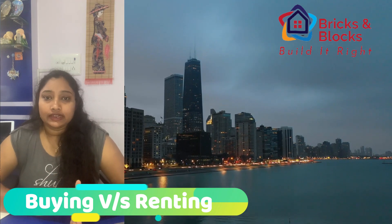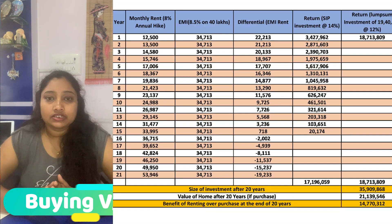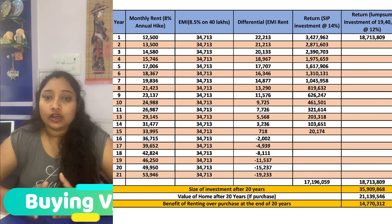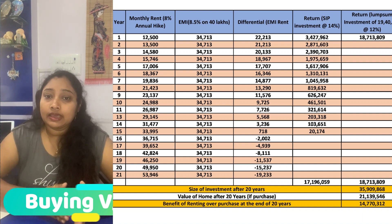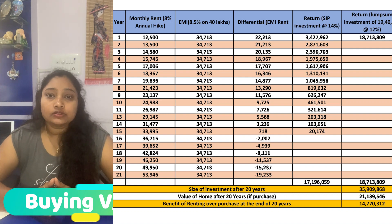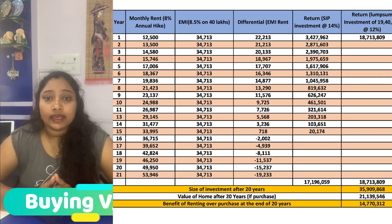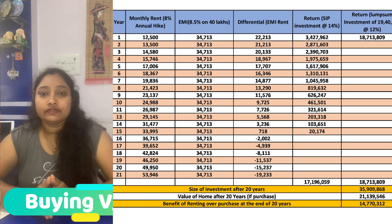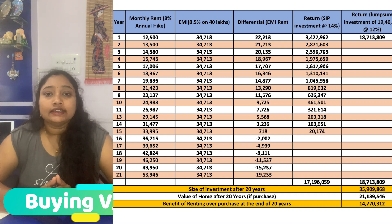To compare owning versus renting, the first step is to calculate the investment returns on the down payment and other related costs incurred while buying the house. The second step is to calculate the investment returns on the difference between EMI payments and rent over the entire duration of ownership. The down payment is rupees 10 lakh and other capital outlay is rupees 9.4 lakh, giving a total one-time lump sum capital outlay of rupees 19.4 lakh. The returns on the lump sum investment are assumed to be 12% and returns on monthly investments are assumed to be 14%.